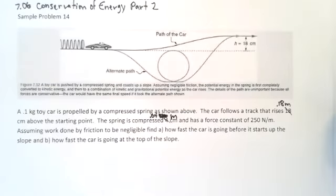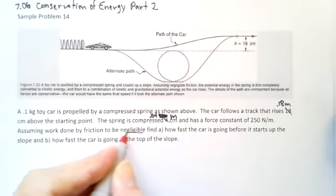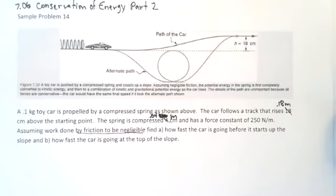Assuming work done by friction to be negligible, find A, how fast the car is going before it starts up the slope and B, how fast the car is going at the top of the slope. Now, in any conservation of energy problem, you have to know what friction is doing. Because if friction was not negligible, we would have to take that into account. But here it is, we can ignore it.